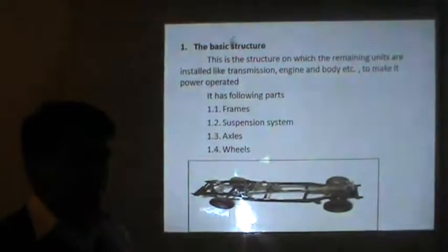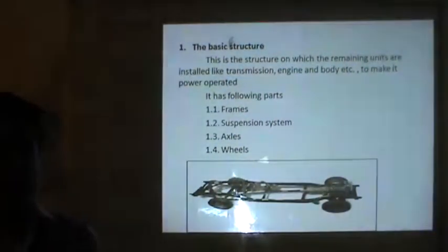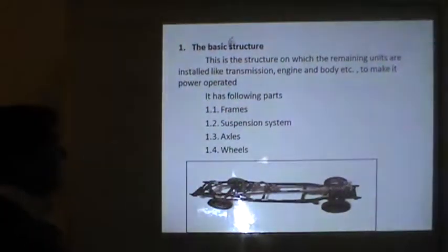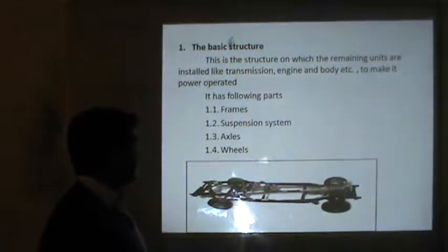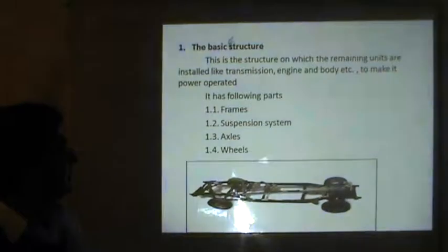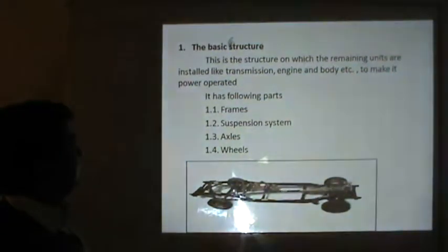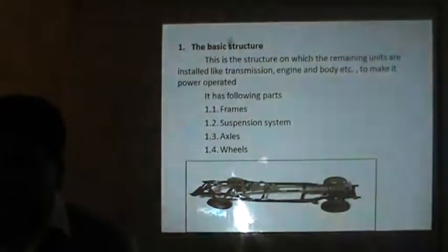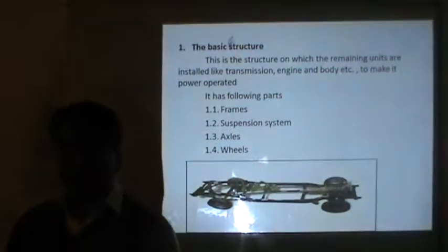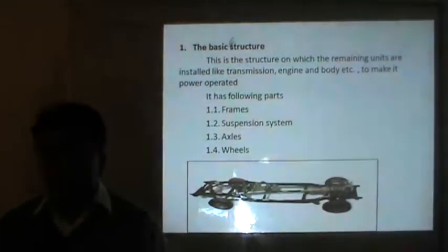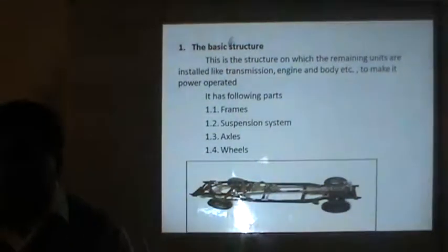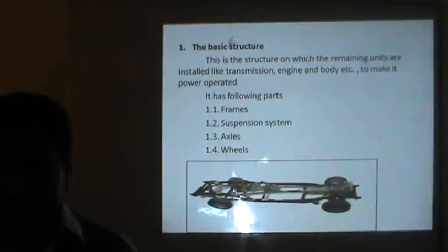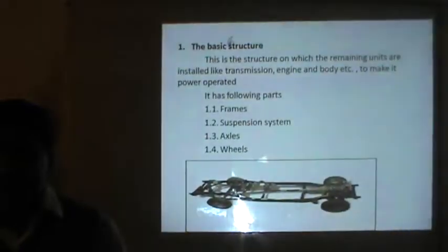Let me give a brief introduction about each of the components we have talked about. The first component is the basic structure — it is the structure on which all remaining units are installed, including the transmission, engine, and body. This basic structure consists of frames, the suspension system, axles, and wheels.